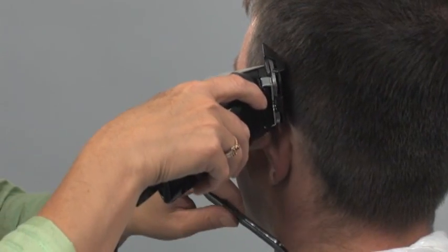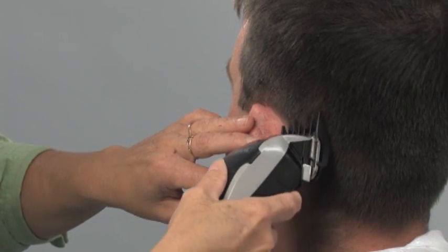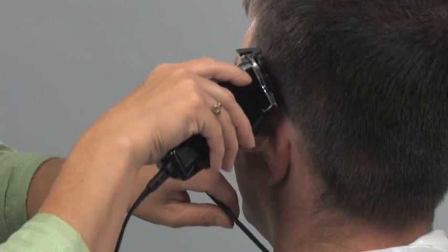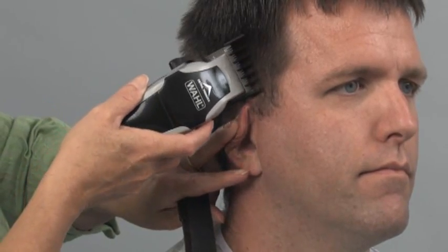To achieve an evenly tapered look around the ears, first use the left ear guide comb. Starting behind the ear, arch the clipper around the ear for a clean line. Repeat this step on the right side using the right ear guide comb.